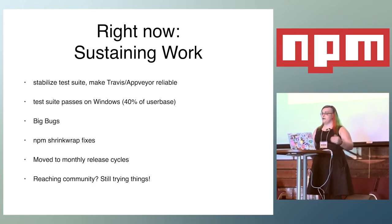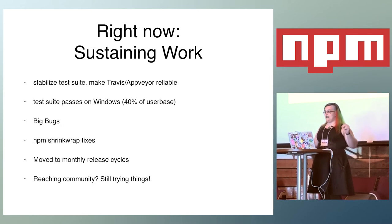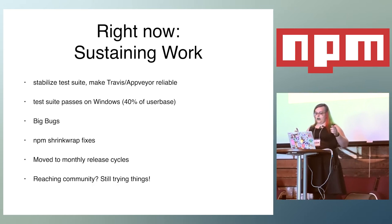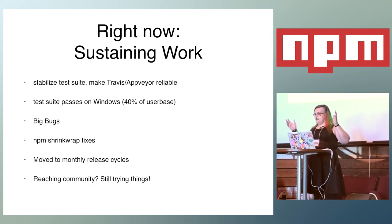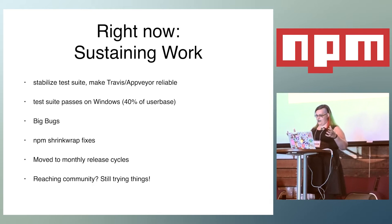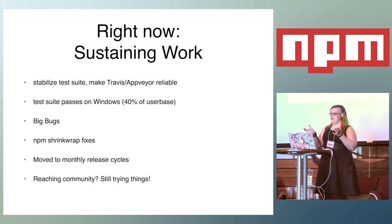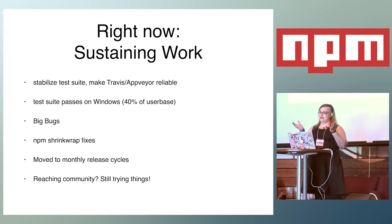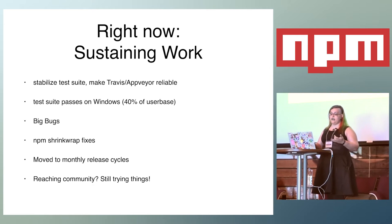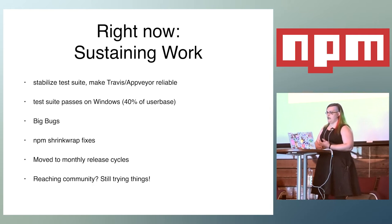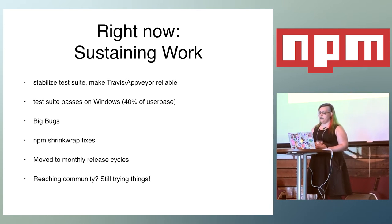Speaking of bugs, what we're doing right now at the NPM CLI team is focusing on sustaining work — that is the main focus. For those unfamiliar with the term, there's sustaining work and expanding work. Sustaining work means we have this thing and we want to make it not terrible. We're going to fix bugs, work on the test suite, and address those big issues that keep getting thrown our way.